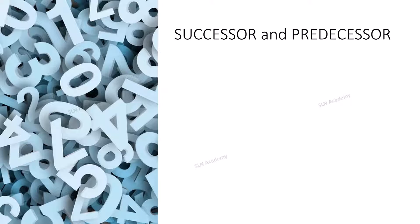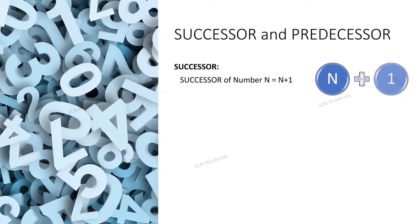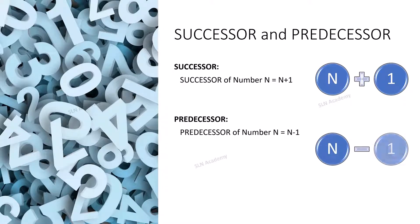So, how to write the predecessor and successor of given numbers? It is so simple. To find the successor of a number, add 1 to that number — if the number is n, then the successor is n plus 1. To find the predecessor of a number, subtract 1 from that number, so the predecessor of n equals n minus 1.